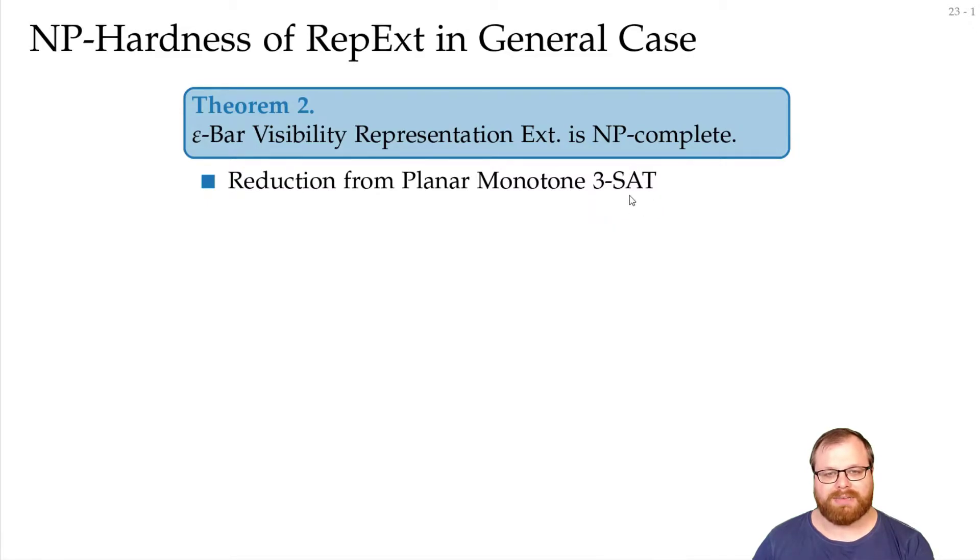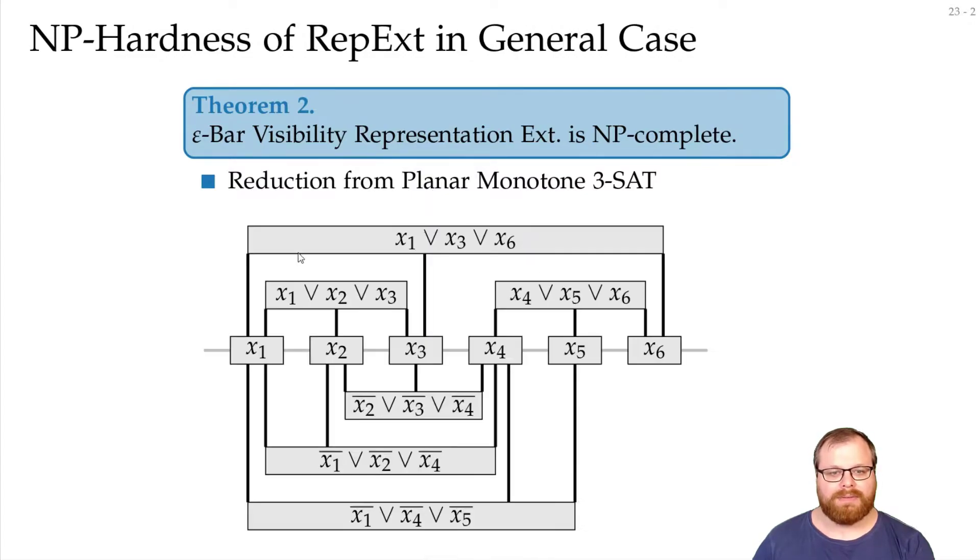So you all know satisfiability. In 3-SAT, we have at most three literals in any clause. In planar 3-SAT, we can draw the graph with the variables and the clauses, where we have a vertex for every variable and a vertex for every clause, and an edge if a variable appears in a clause, planarly.